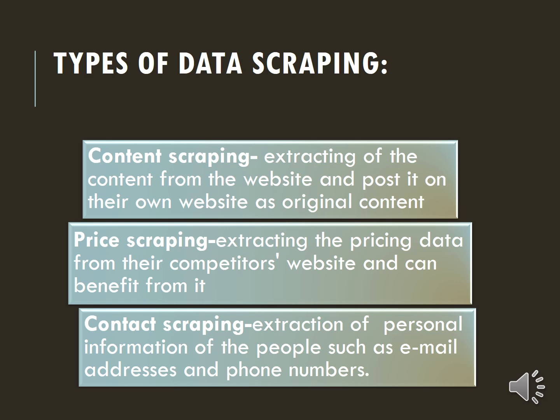What are the types of data scraping? There are three types of data scraping. One is content scraping, price scraping, and contact scraping. Content scraping is the extracting of content from a website and posting it on their own website as the original content. Price scraping is collecting price data from competitor websites to take benefit from it. Contact scraping is the extraction of personal information such as email addresses and phone numbers.